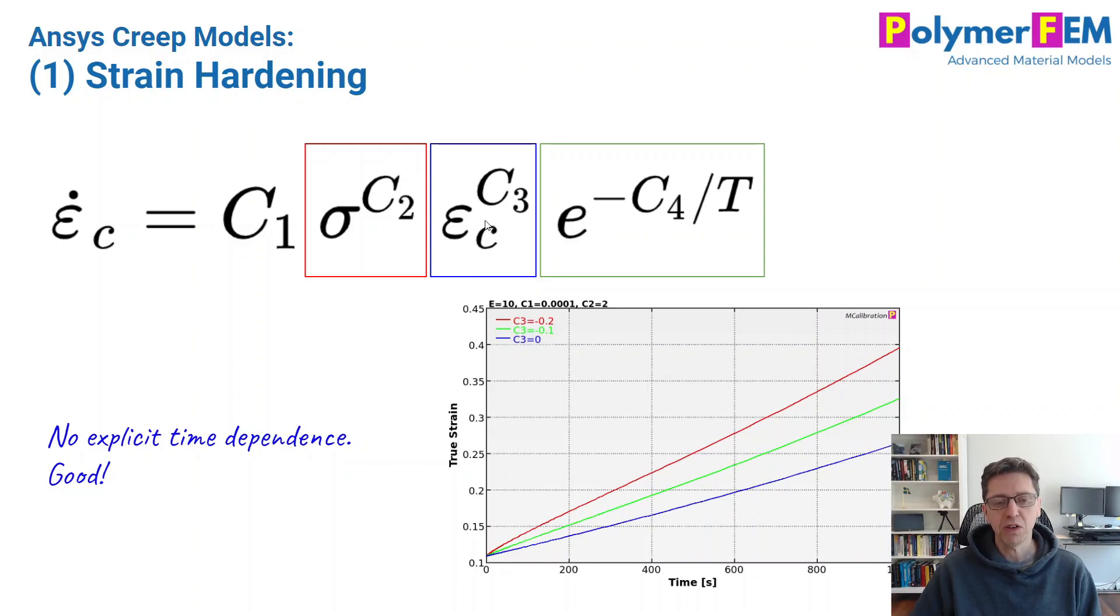The purpose of the C3 term here is, first of all, C3 has to be negative, and that makes the creep rate a little bit higher at small times, and then it reaches more of a plateau. So this is often used for primary creep if C3 is equal to a negative number. This is pretty useful for the perspective, and I kind of like this model that's available in ANSYS.